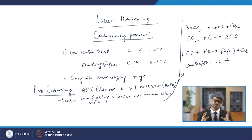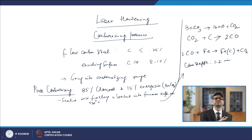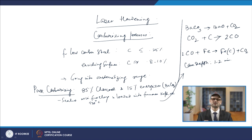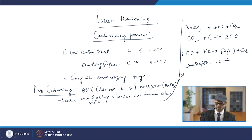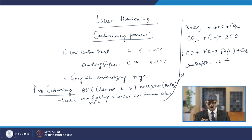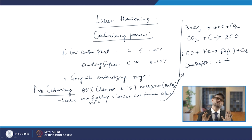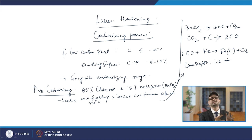If certain parts of the component do not require hardening, they can be masked using copper plating to a certain thickness to avoid carbon pickup, or by applying refractory paste — fire clay mixed with asbestos — on those surfaces so that hardening does not take place in those regions.